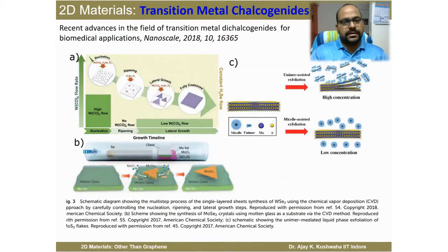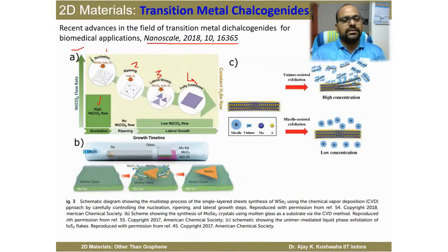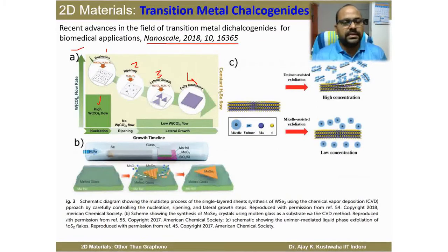Transition metal chalcogenide sheets can also be grown using chemical vapor deposition (CVD). In the CVD process, there are four steps: step one is nucleation, step two is refining, step three is lateral growth, and step four is when the surface is fully covered. At the beginning, a very high concentration of precursor nucleates the transition metal chalcogenide over a substrate, then the supply of W(CO)₃ precursor is stopped.